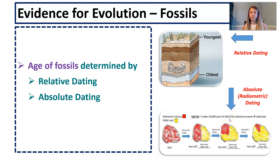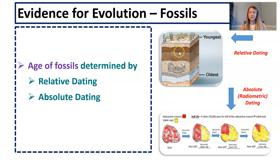What kind of evidence do fossils give us? First of all, they give us a relative idea of when an organism existed. The age of a fossil is determined in two ways: through relative dating and through absolute dating. Relative dating gives us a relative age by telling us which fossils are older and which are younger based on where they're found in the sediment. Absolute dating, or radiometric dating, gives us an absolute age of a fossil, telling us exactly when an organism existed by looking at the half-life decay of radioactive isotopes.